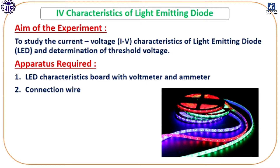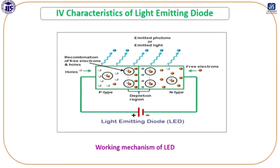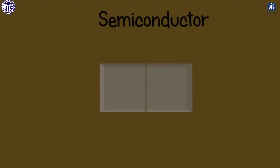The aim of the experiment is the study of the I-V characteristics of an LED. LED is a semiconductor device that emits electromagnetic radiation at optical and infrared frequencies. The device is a p-n junction diode, usually using GaAs, GaP, and SiC.